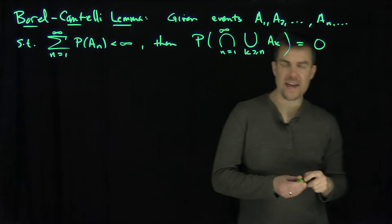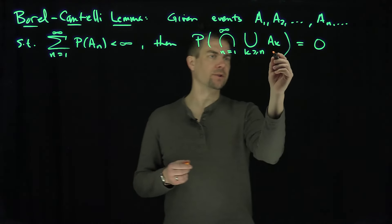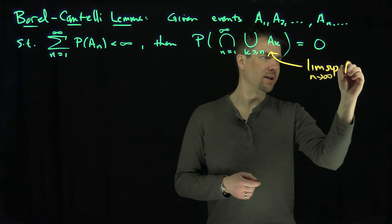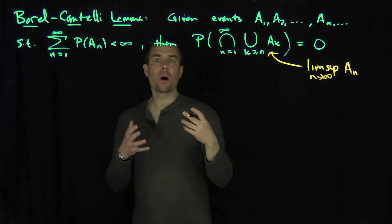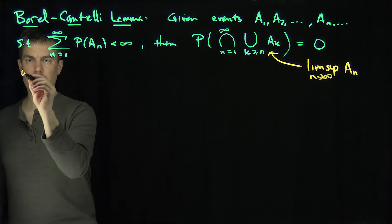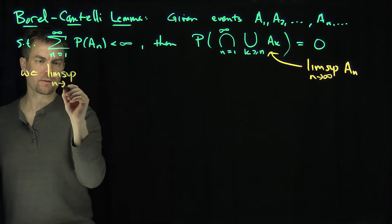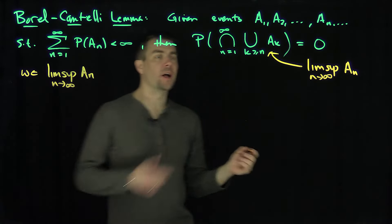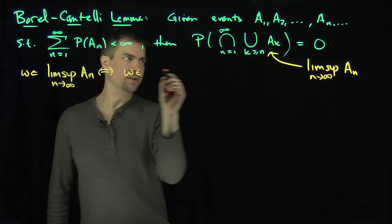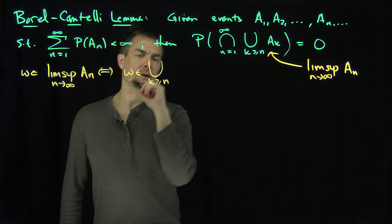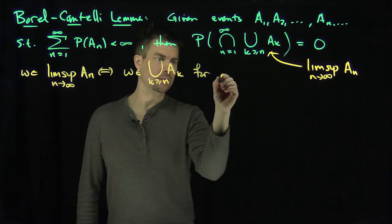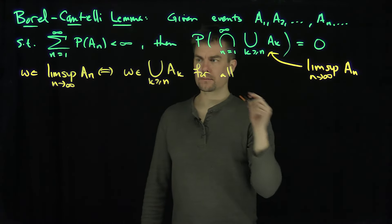This event is called the limsup of the AN. In some textbooks you may see this written as the limsup as n goes to infinity of the sets AN. Now, omega is in this set — omega is in the limsup as n goes to infinity of AN — implies that for every n, omega is in the union over k greater than or equal to n of AK, for all N.